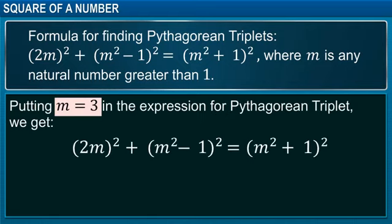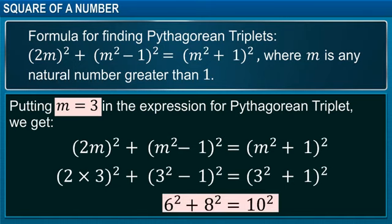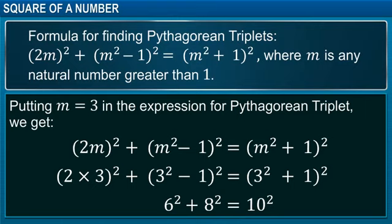Putting m equal to 3 in the expression, we get the Pythagorean triplets of 6, 8 and 10. You can try putting in different values of m to find Pythagorean triplets.